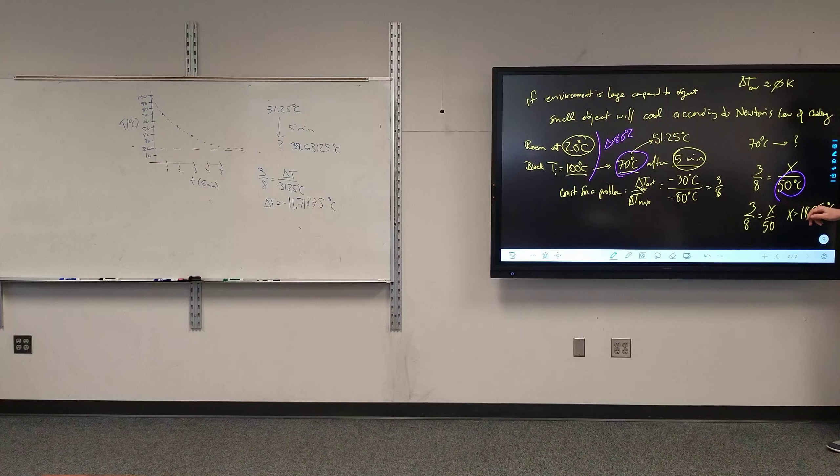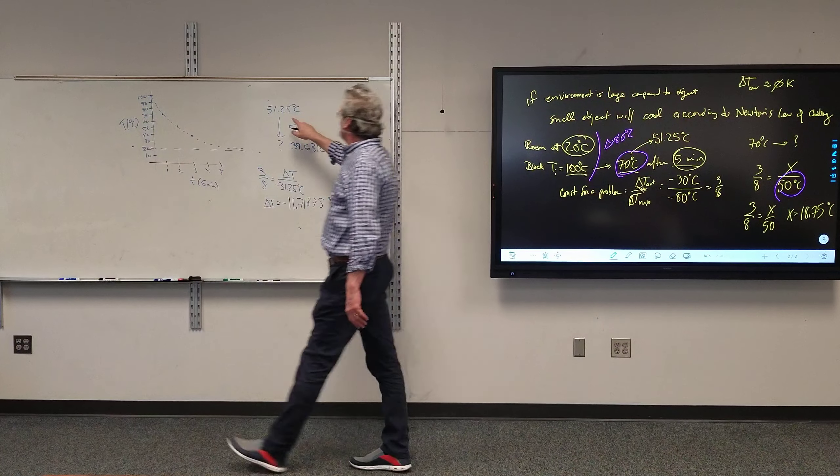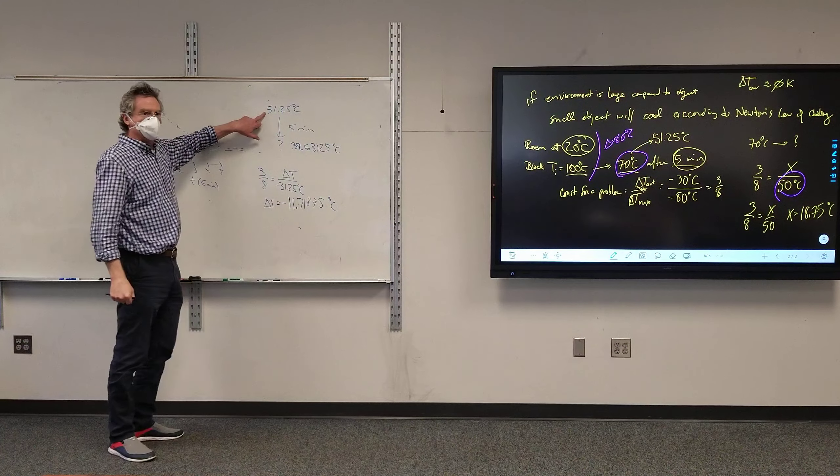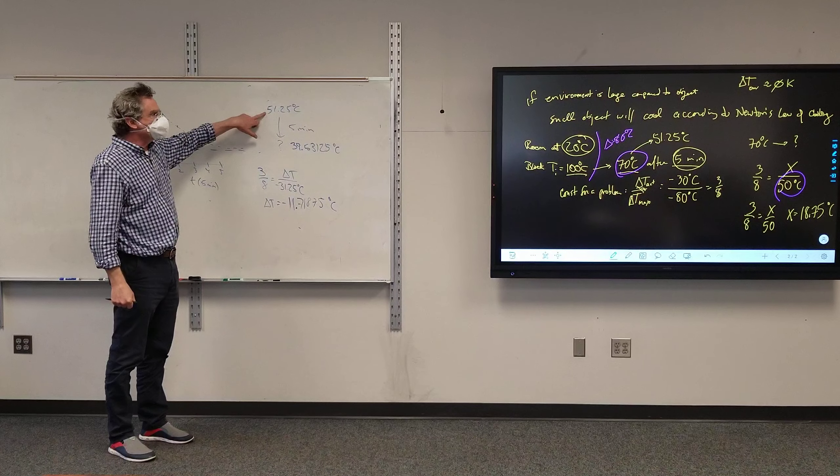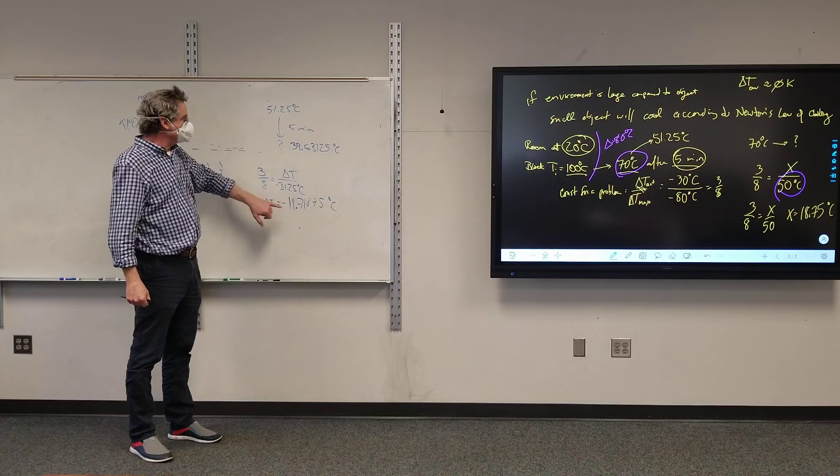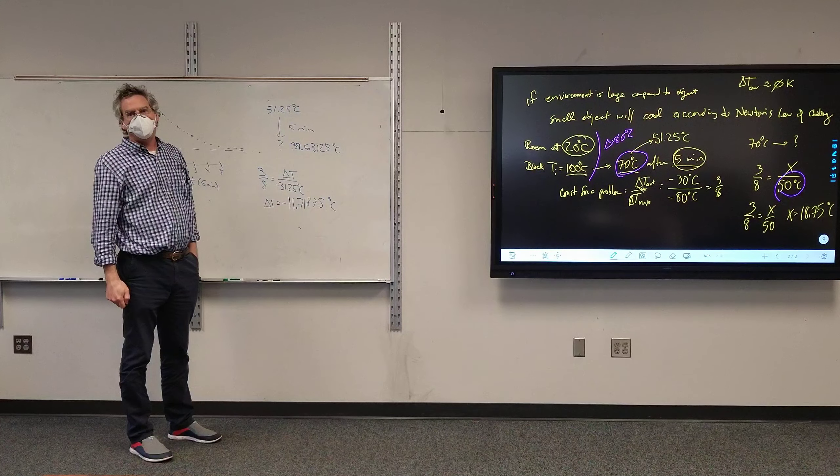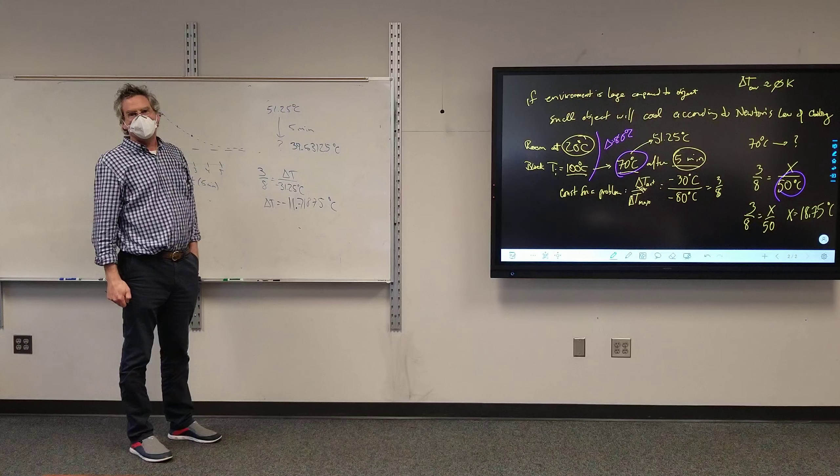And then, once we establish that it is at 51.25 degrees Celsius, the most it can lose now, well, again, the room's at 20 degrees Celsius, the most it can lose now is 31.25 degrees. Okay, so X is equal to the change in temperature every five minutes. Yes.